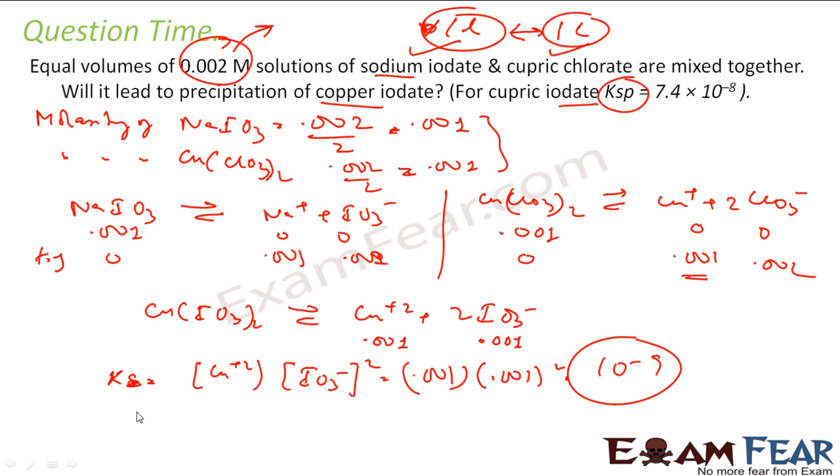And if you see the value of Ksp given here for the same equation is 7.4 times 10 to the power minus 8. And if you see here, Ksp is more than K, the ionic solubility product. Since Ksp is more, it won't precipitate.